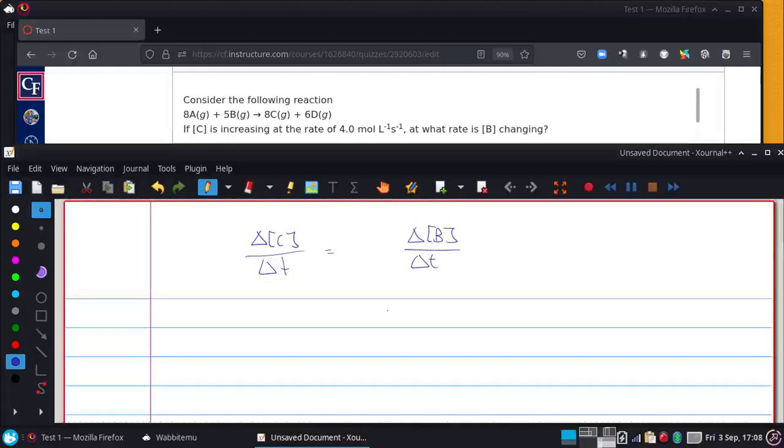B is a reactant, and there's going to be the coefficient as a factor. C is a product, and it's going to have an 8 for that 8.